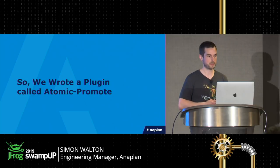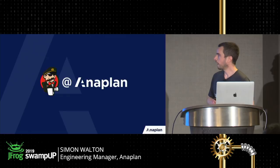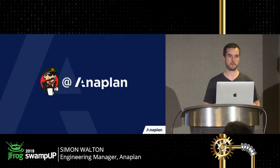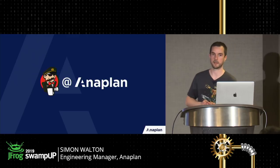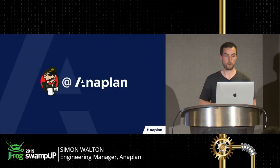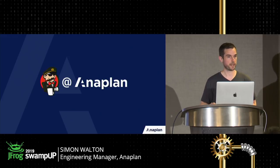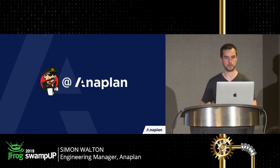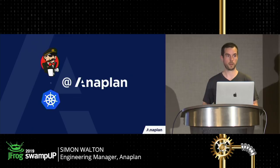We wrote a plugin for Artifactory called Atomic Promote, designed to solve a set of problems we had at Anaplan around CI/CD. We're a Jenkins house — we use Jenkins for pretty much everything to do with build tooling. We had a move towards more CI/CD ways of working, with a brand new project called the New User Experience that we wanted to ship to customers. We realized we couldn't go through the long-winded release cycles we currently have, so this was the ideal use case for deploying a Kubernetes cluster.